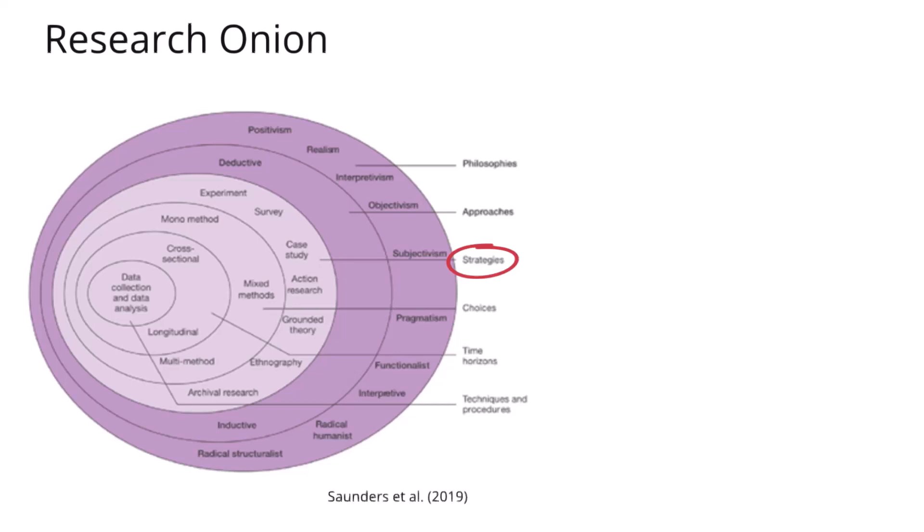At this stage, the decisions start to have more of an impact on the research methods you will use to collect your data. This is why the research onion from this stage is often depicted in a different shade of colour, because these are the more practical decisions that you need to make.